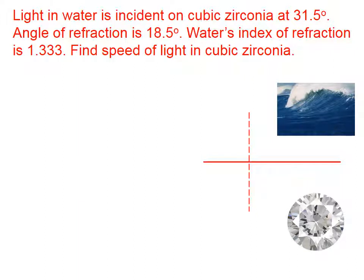We need to find the speed of light in cubic zirconia. It says that the light starts out in water and travels into this other medium, cubic zirconia. We're told the incident angle and the refractive angle, and we're told the index of refraction for water.